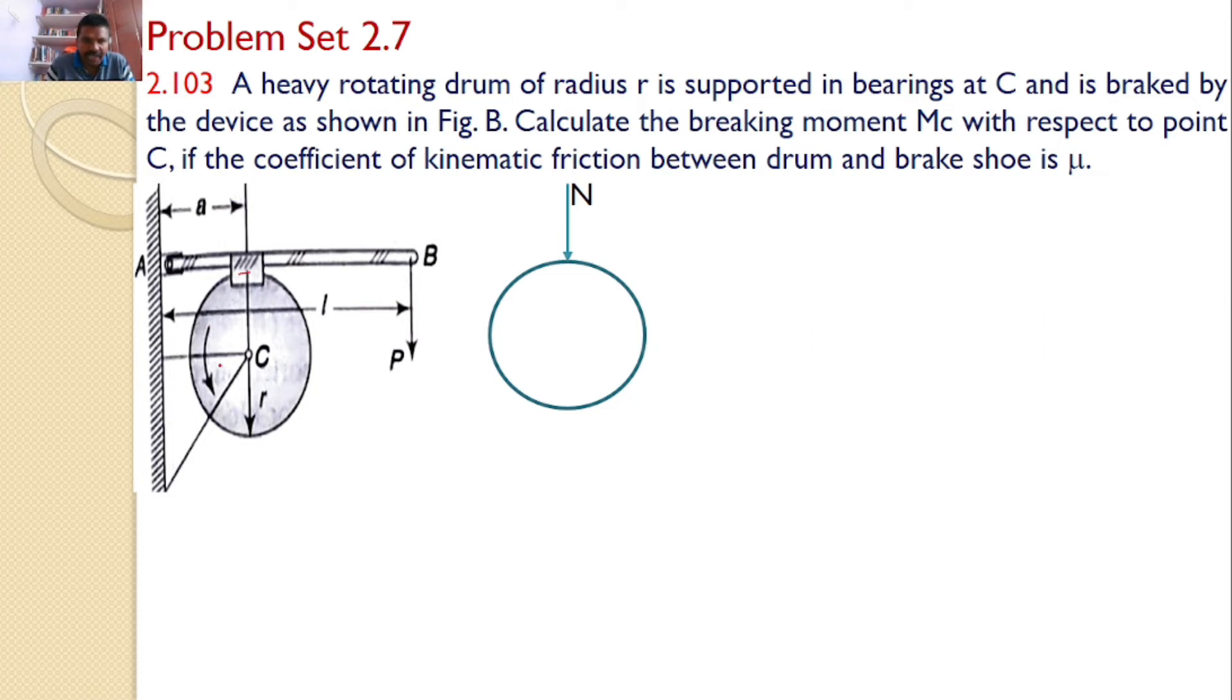The drum is rotating in this direction. So, at this point, since the drum is moving in this direction, the frictional force acts opposite to that. Let the magnitude of the frictional force is mu into N.